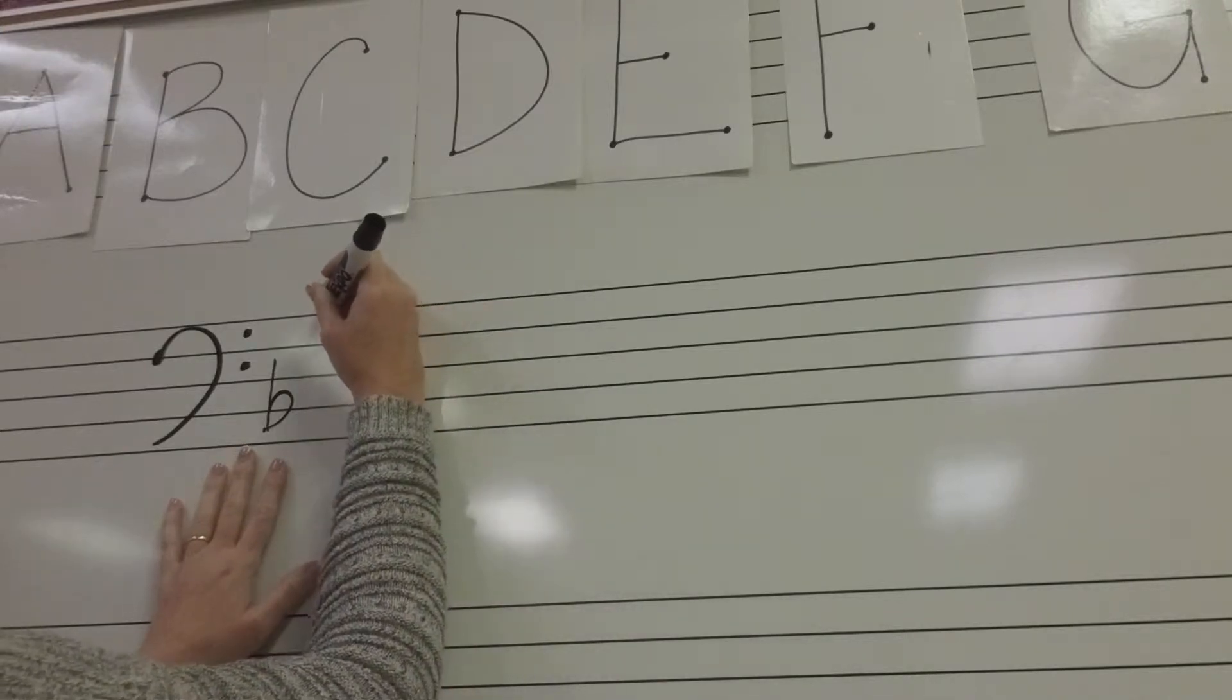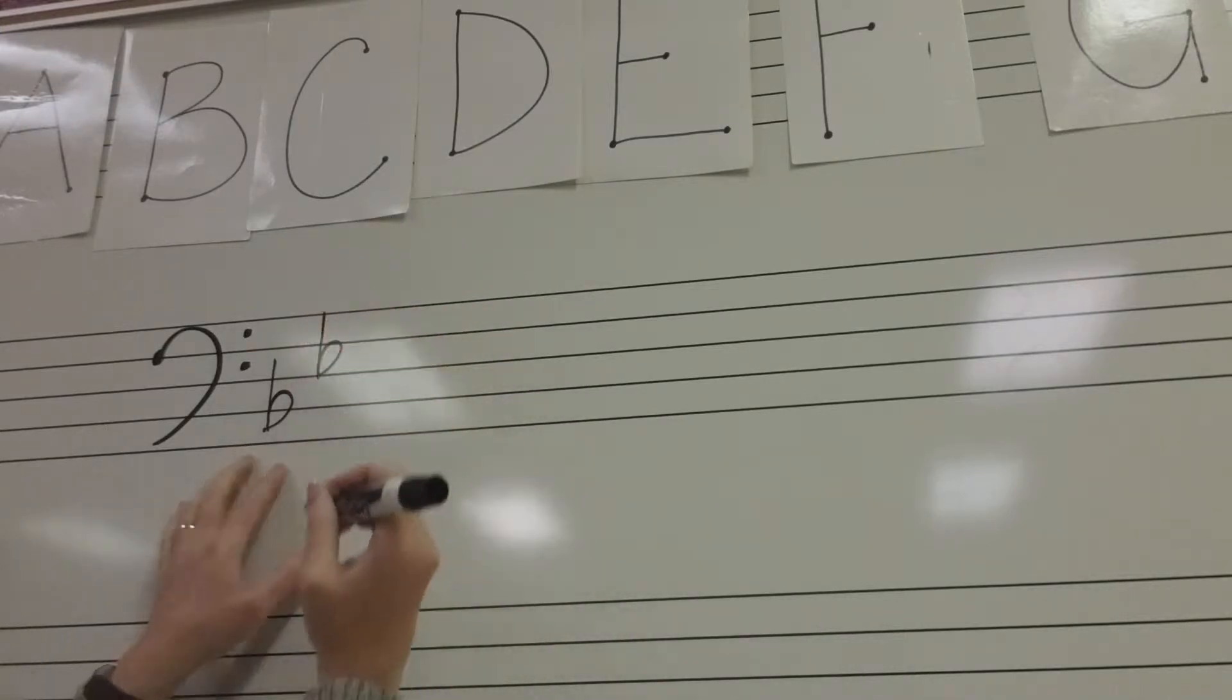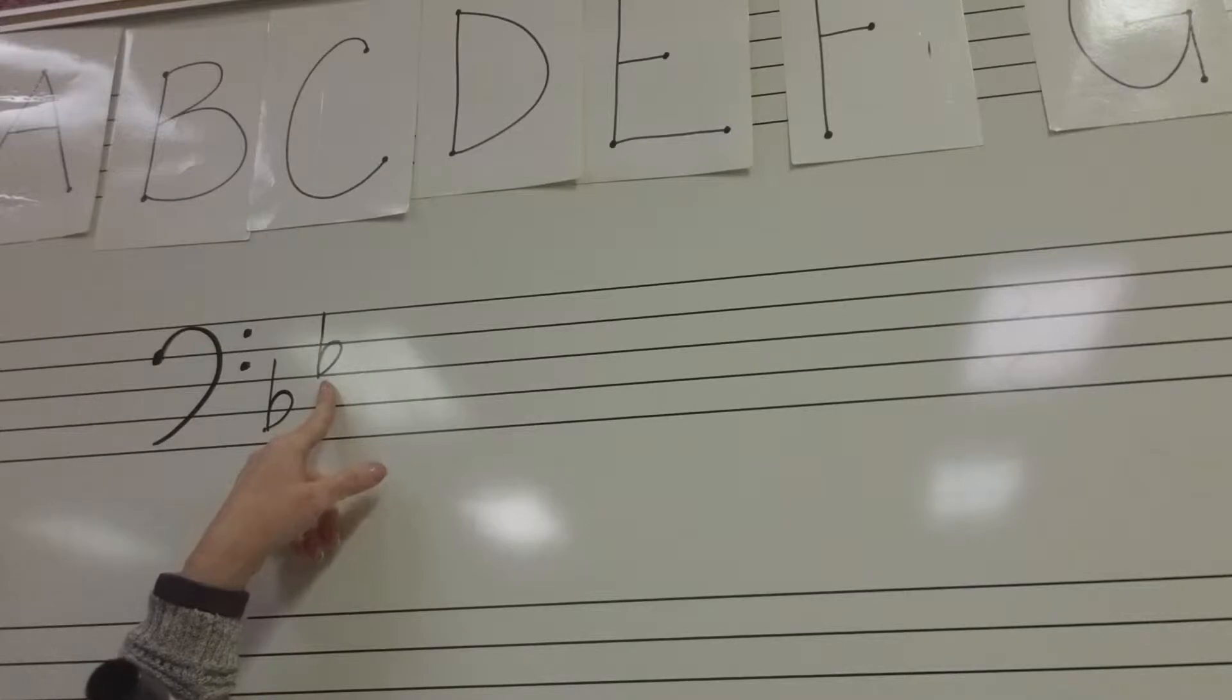I'm going to stagger a little bit. And I'm going to draw a flat sign in the third space. And this is for the E flat. This tells you that all E's are flat no matter where they are in the staff.